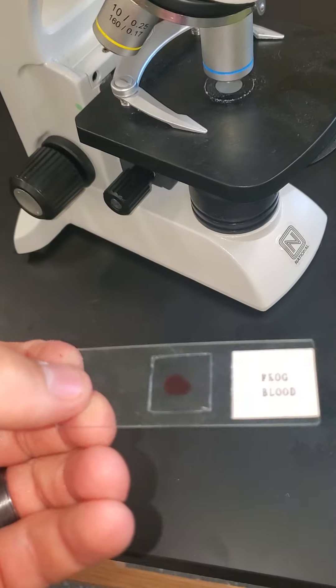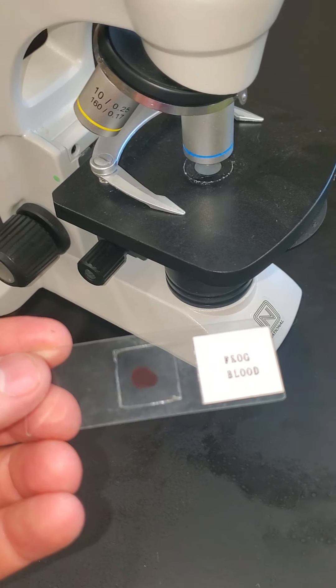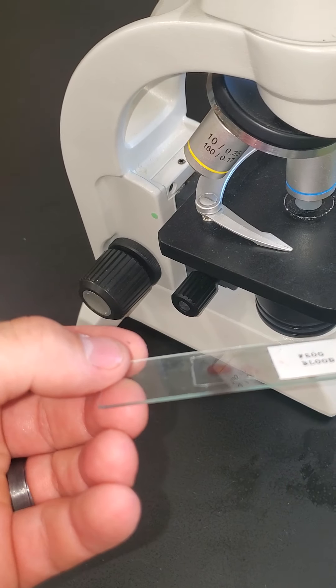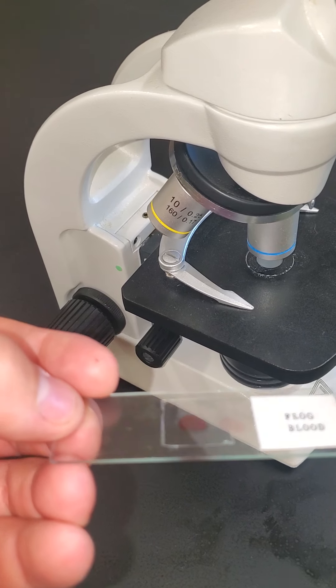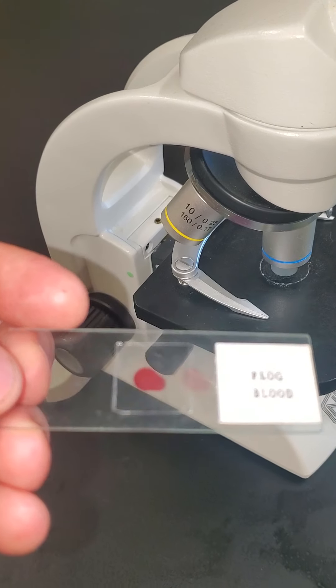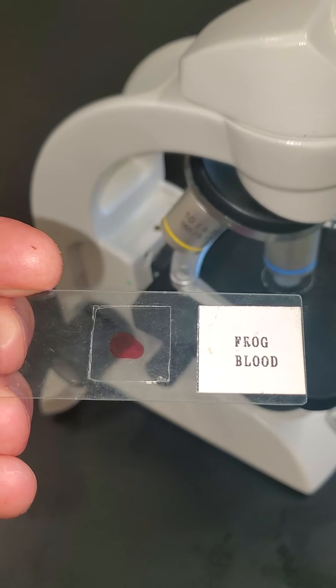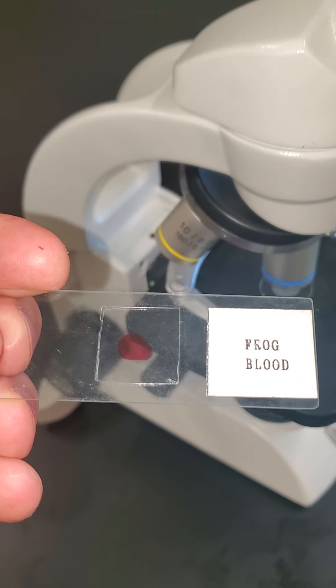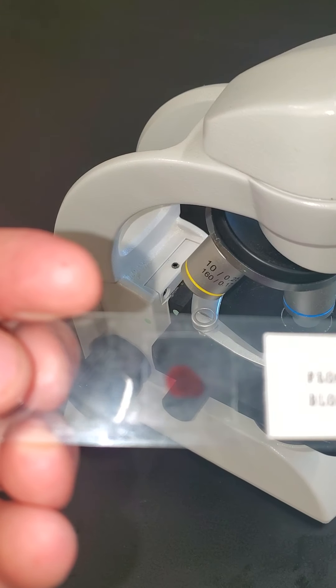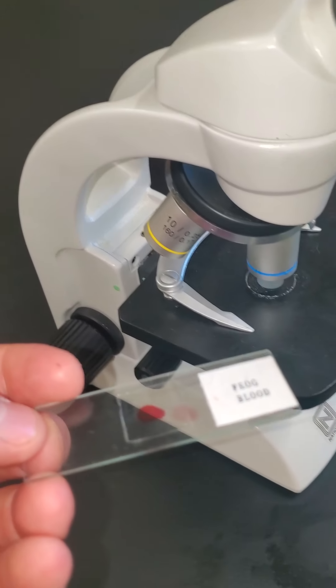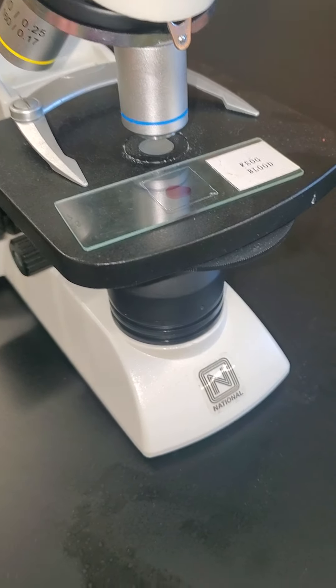We typically will have a specimen or a sample in a slide like this. It's a glass slide with, in this case, frog blood on it. There's a slide cover protecting and pinching the frog blood in between two surfaces, and that would go on the slide table.